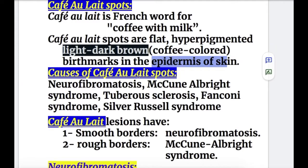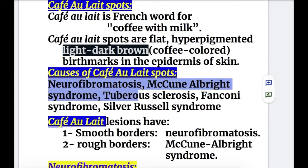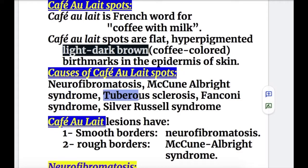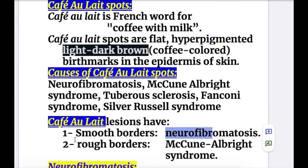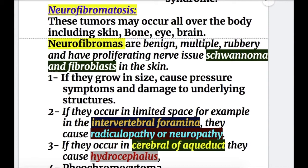The causes of café-au-lait spots are: number one, neurofibromatosis; number two, McCune-Albright syndrome; number three, tuberous sclerosis; and also Fanconi syndrome and Silver-Russell syndrome. Café-au-lait spots may have smooth or rough borders. They have smooth borders in neurofibromatosis and rough borders in McCune-Albright syndrome.